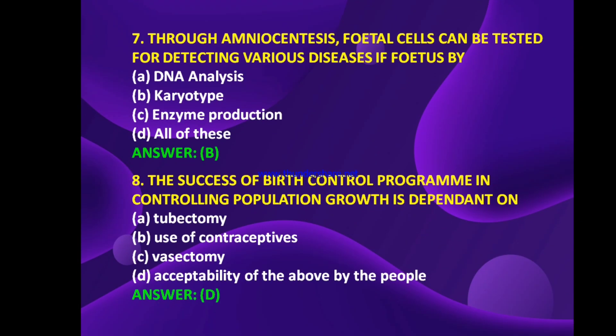In amniocentesis, fetal cells can be tested for detecting various disorders of the fetus by DNA analysis, karyotype, enzyme production, or all of these. The answer is B — karyotype.